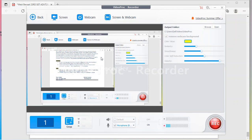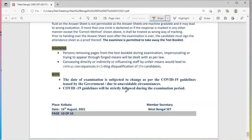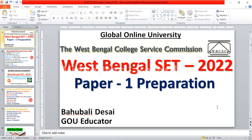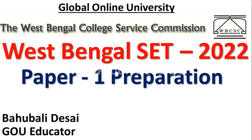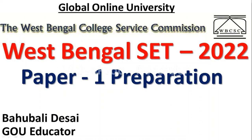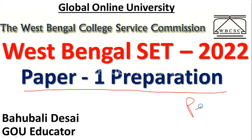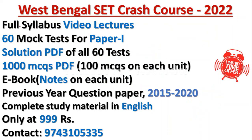This is about the West Bengal State Eligibility Test. Now let us move to Paper 1 preparation. This is very important — please listen carefully. If you are preparing for WB SET, in order to clear the examination, you have to qualify in Paper 1 and score more marks there. For your Paper 1 preparation, Global Online University has come up with a crash course.